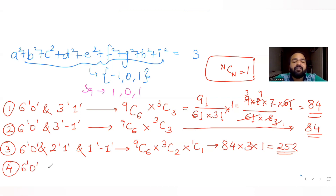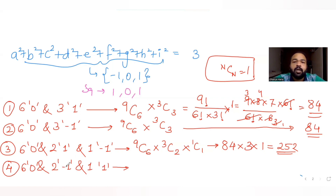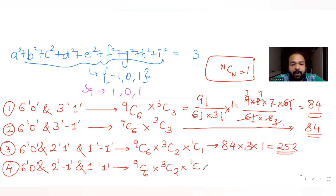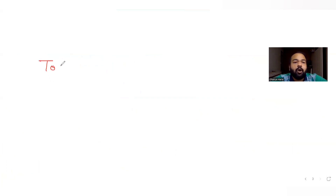Fourth combination: six zeros, two elements are -1, and the remaining one element is 1. Since (-1)² = 1, the two minus-ones contribute 2 and the one contributes 1, giving a total of 3. So again 9C6 × 3C2 × 1C1 = 84 × 3 × 1 = 252 possibilities.